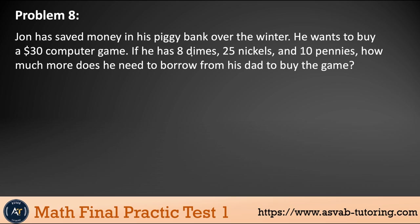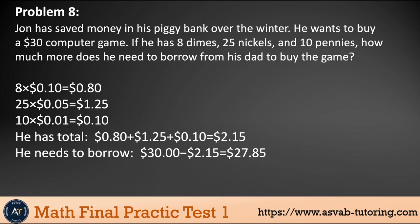Problem 8: John has saved money in his piggy bank and wants to buy a $30 computer game. He has 8 dimes, 25 nickels, and 10 pennies. Eight dimes = $0.80; 25 nickels = $1.25; 10 pennies = $0.10. Total = $2.15. Since he needs $30, he must borrow $30.00 − $2.15 = $27.85 from his dad.